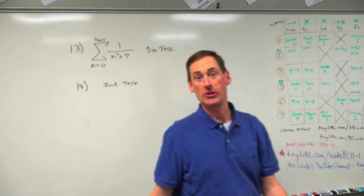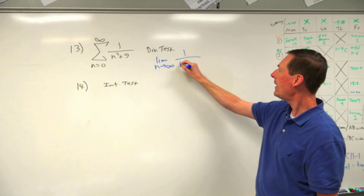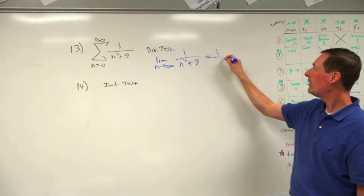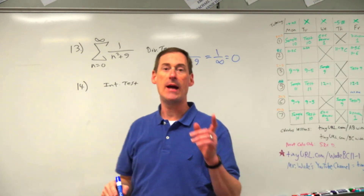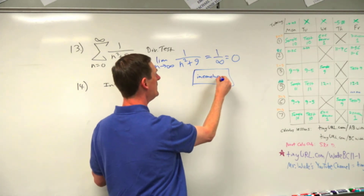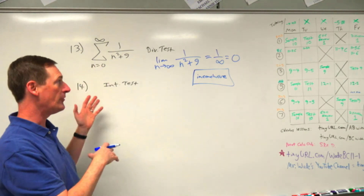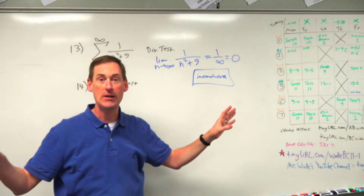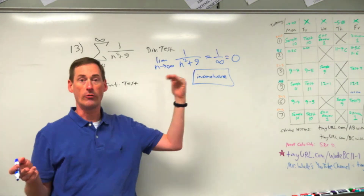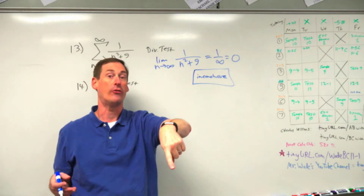Number 13: simply do the divergence test. Take the limit as n approaches infinity of a sub n. Plug in infinity as your first option — you get one over infinity, which is zero. In the divergence test, if you get zero it is inconclusive. The divergence test does not test for convergence; it tests for divergence. If you get anything other than zero, it is divergent for sure. One over n gives zero here and it's divergent; one over n squared gives zero here and it's convergent — so the zero tells you nothing.